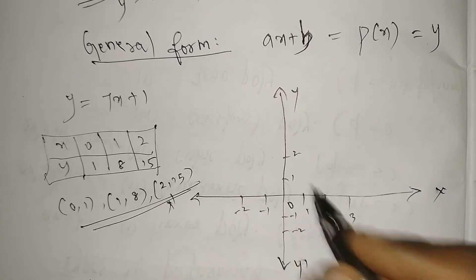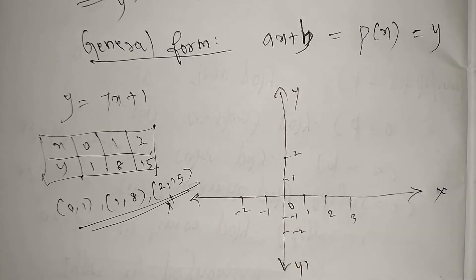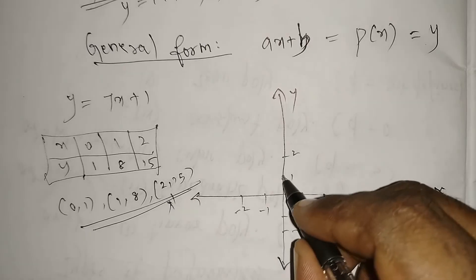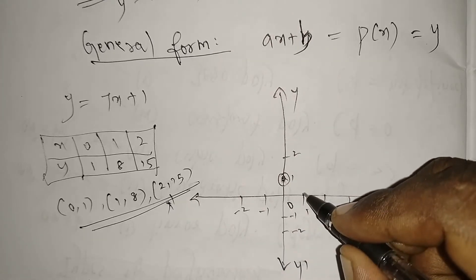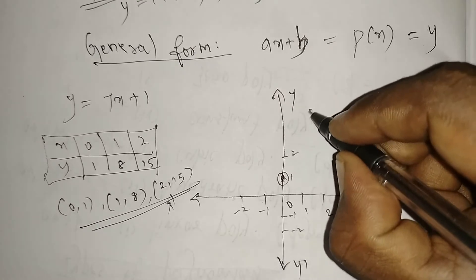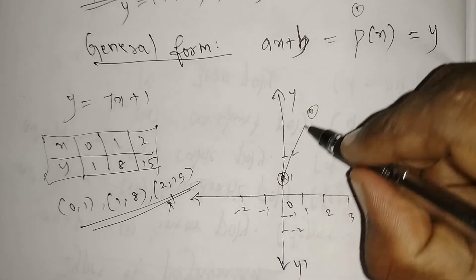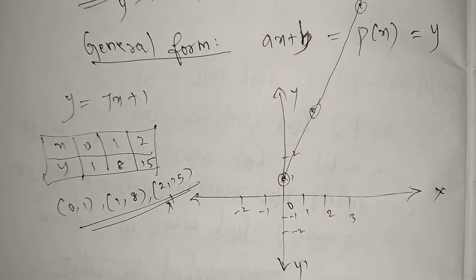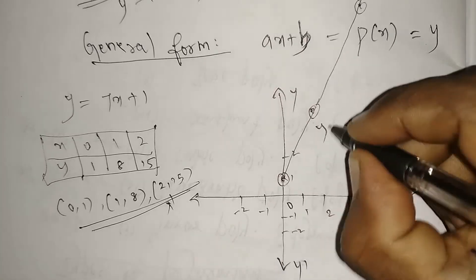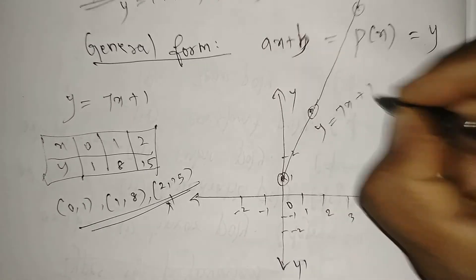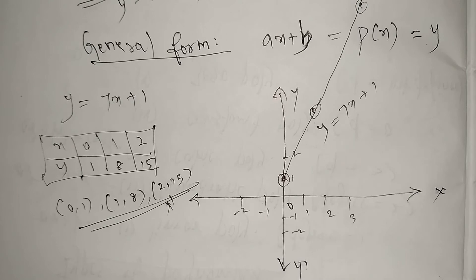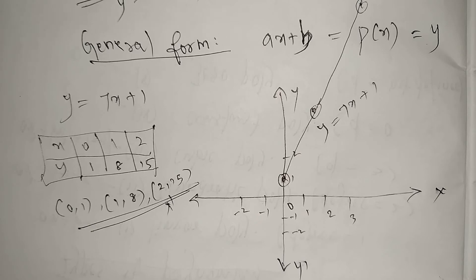So the points are (0, 1), (1, 8), and (2, 15). We plot these points on the graph and join them. What we get is actually one straight line - y = 7x + 1. So if we have degree one, we are getting a straight line. This linear equation is represented in the graph as a straight line.